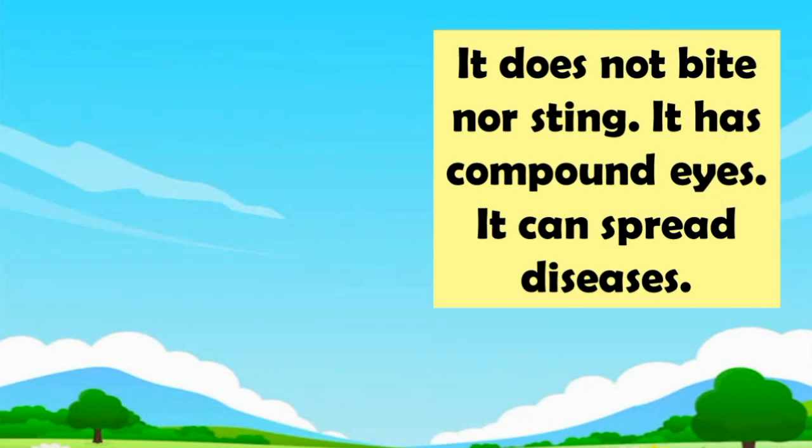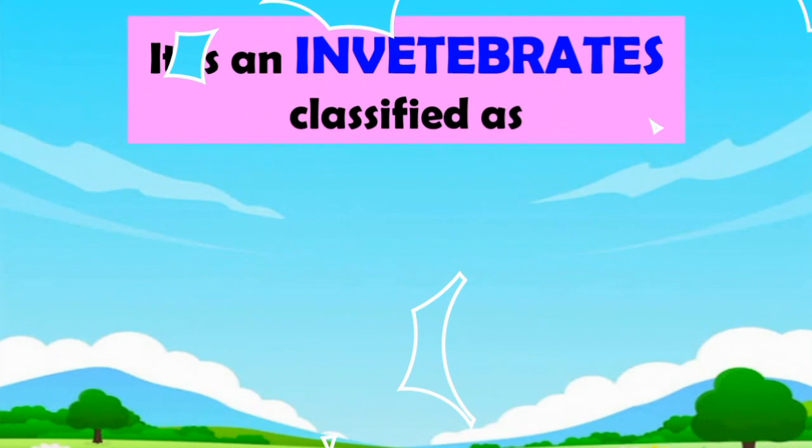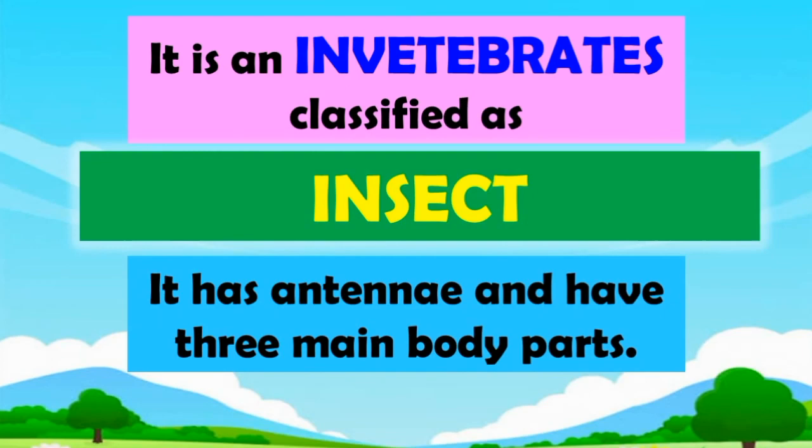Guess what? It does not bite nor sting. It has compound eyes. It can spread diseases. What is it? A housefly! A housefly is an invertebrate classified as insect. It has antennae and three main body parts.